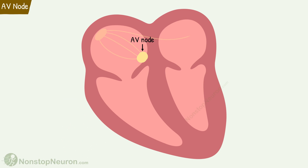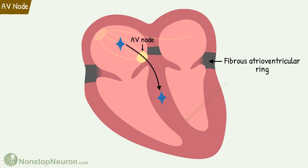The AV node is located in the posterior wall of the right atrium, immediately behind the tricuspid valve. It is the only site where the impulse can pass from the atria to the ventricles. This is because a continuous fibrous atrioventricular ring separates the atrial muscles from the ventricular muscles. It acts as an insulator and does not allow the passage of impulses from the atria to the ventricles, and also prevents re-entry of impulses from ventricles back into the atria.